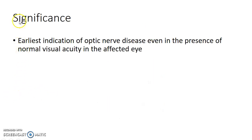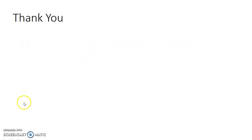The significance of Marcus Gunn pupil is that it is the earliest indication of optic nerve disease — it is positive even in the presence of normal visual acuity in the affected eye.